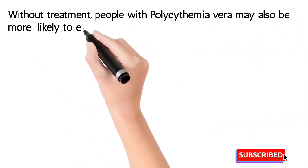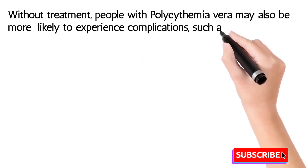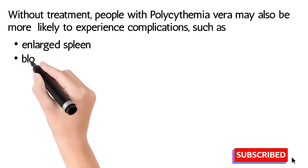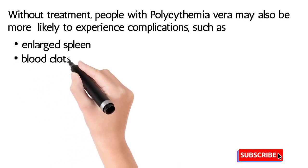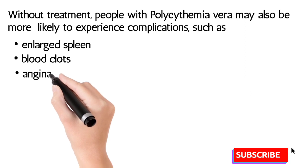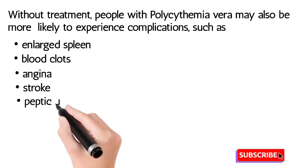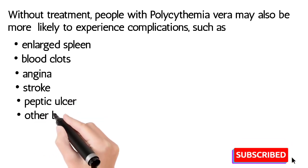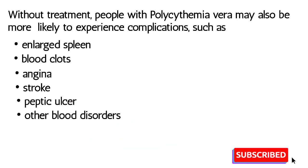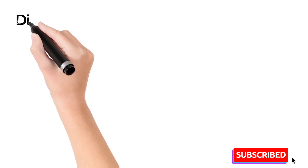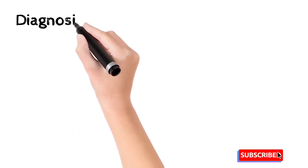Without treatment, people with polycythemia may also experience complications such as enlarged spleen due to excess RBC production, blood clots, angina, heart attack or stroke, peptic ulcer, and other blood disorders.